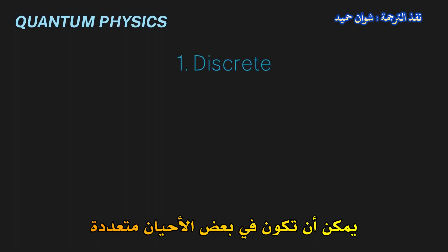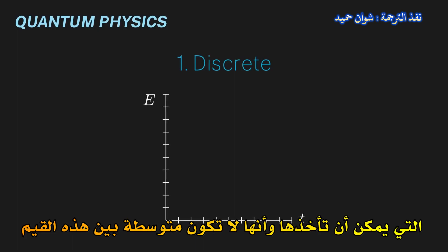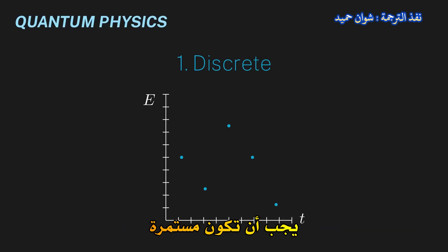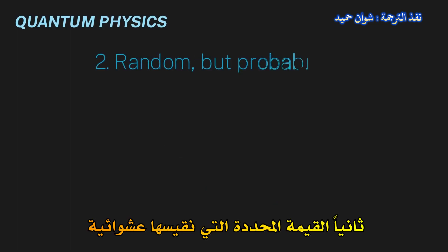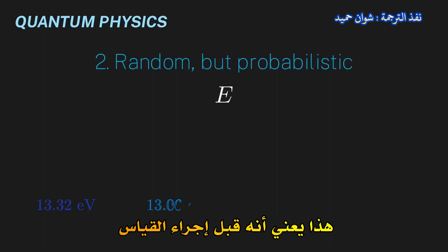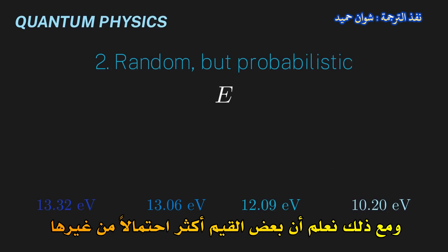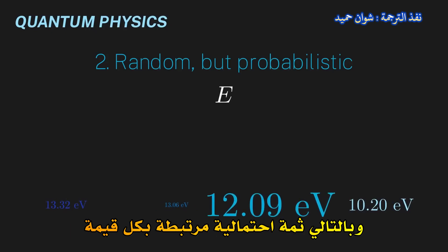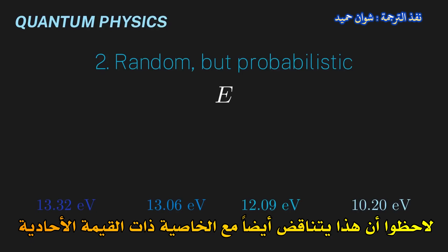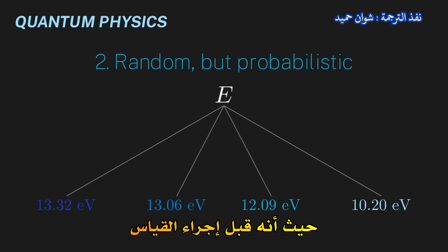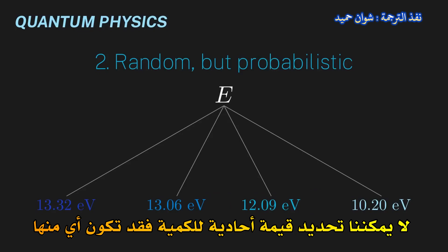Let's summarize these conclusions and their implications. First, our experiment showed that physical quantities can sometimes be discrete, meaning we can list all the possible values they can take, never equaling something in between these values. Note that this contradicts the idea that physical quantities must be continuous. Second, the particular value that we measure is random but probabilistic. This means that before making a measurement, we do not know which of the possible energies we will get. However, we do know that some values are more likely than others, so there is a probability attached to each value. Note that this also contradicts the single-valued characteristic, since before the measurement we cannot determine a singular value for the quantity — it could be any of them.